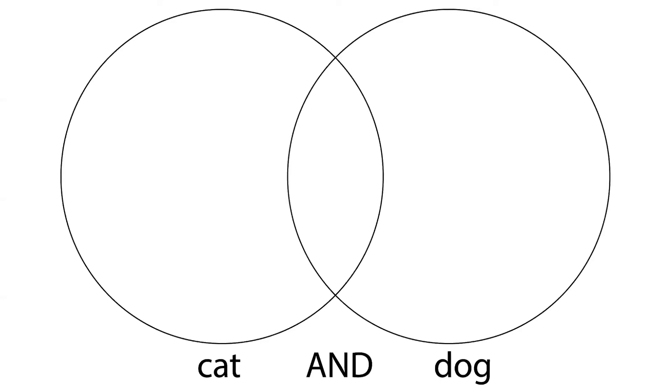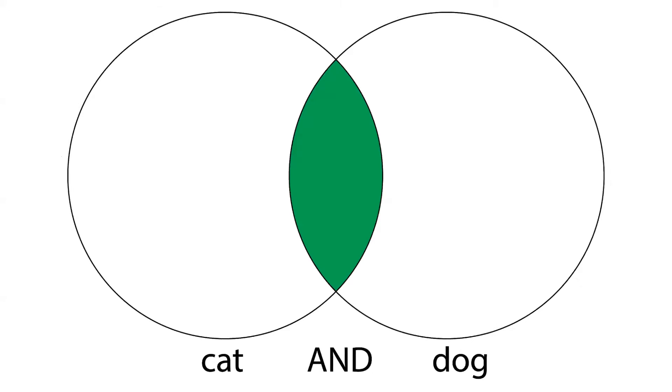If the circle on the left contains all the results with the word cat and the circle on the right contains all the results with the word dog, what part of the Venn diagram will our search return? We'll only get back the results in the middle of the Venn diagram that contain both the word cat and the word dog.